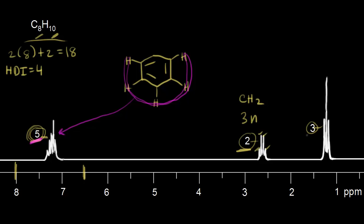Looking at the next signal: three protons, so that's a CH3. Counting peaks: one, two, three — three minus one equals two neighbors. Two neighboring protons must be these two, so we can draw in an ethyl group — a CH2 and a CH3.